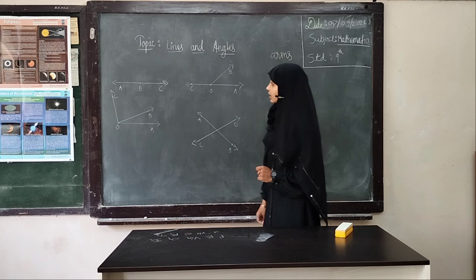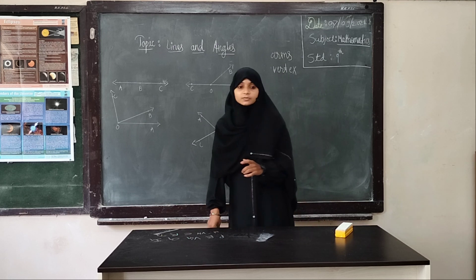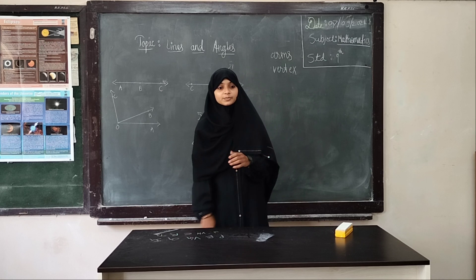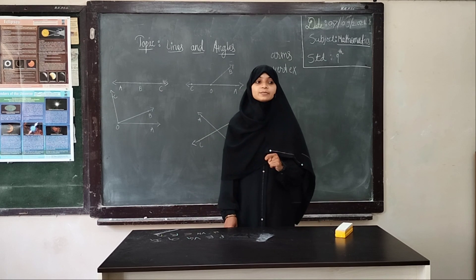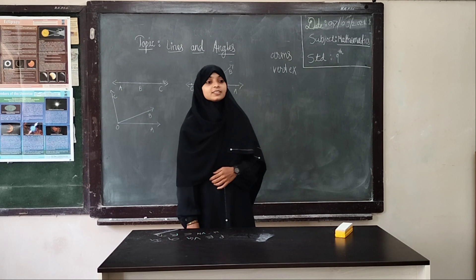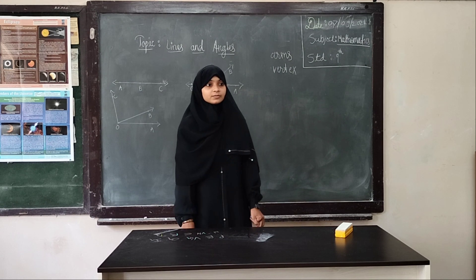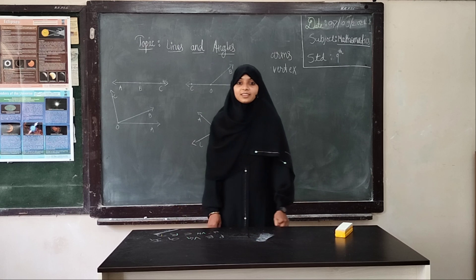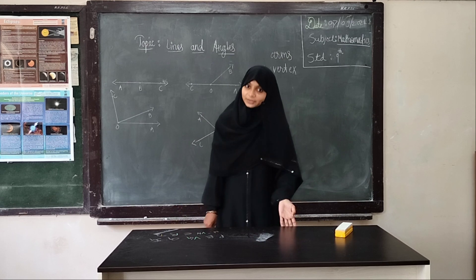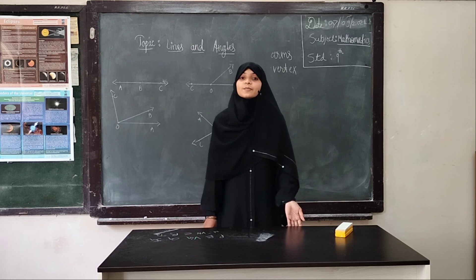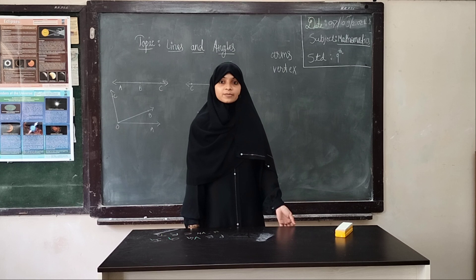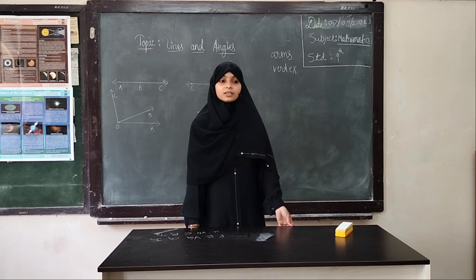What is the definition of an adjacent angle? Yes, Aditi. The angles which are connected by a similar line are known as adjacent angles. Adjacent angles have a common vertex, common side, and no overlap of angles.